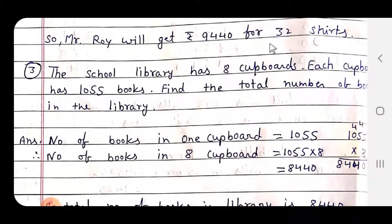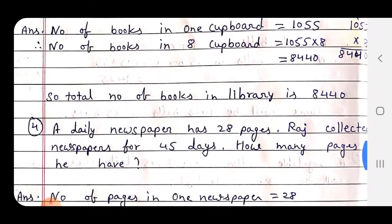The school library has 8 cupboards. Each cupboard has 1055 books. Find the total number of books in the library. Number of books in one cupboard: 1055. Number of books in 8 cupboards: multiply. 8 x 5 = 40, 4 carry over. 8 x 5 = 40 plus 4 = 44, 4 carry over. 8 x 0 plus 4 = 4. 8 x 1 = 8. So total number of books in library is 8440.